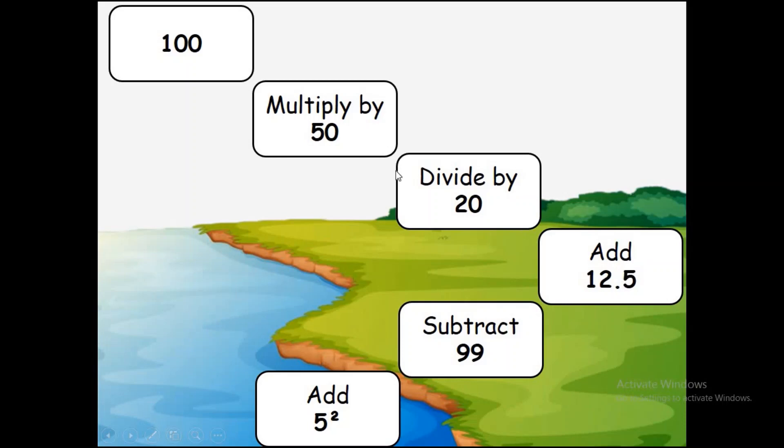Once you've got the answer to that, so we work in steps - get the answer there, whatever the answer is here, you're going to use it here. Then you're going to add 12.5, then you're going to subtract 99, and then you're going to add five squared. Now remember, five squared is five times five.